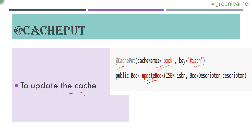You can use @Cacheable and @CachePut on the same method, but it is not advisable because the criteria under which they execute is different. The scenarios under which they get executed are different, so if you use both on the same method you will not get the expected behavior.